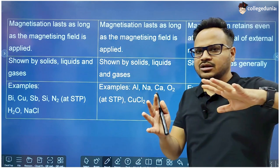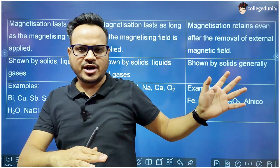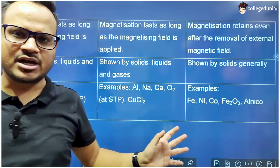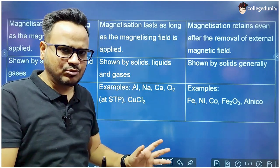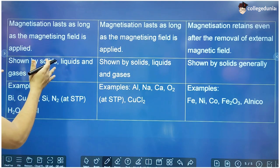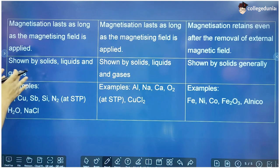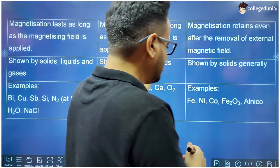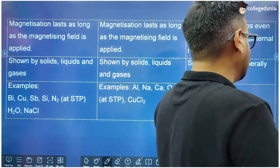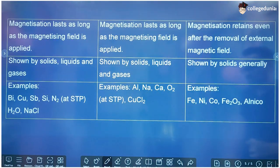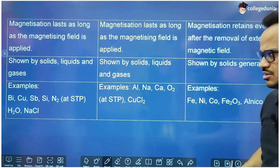The magnetism of a ferromagnetic substance is retained even after the removal of the external magnetic field, because its domains are aligned in a particular direction even in the absence of an external field, giving it a net non-zero dipole moment. Diamagnetism and paramagnetism are shown by solids, liquids, and gases, but ferromagnetism is generally shown by solids.